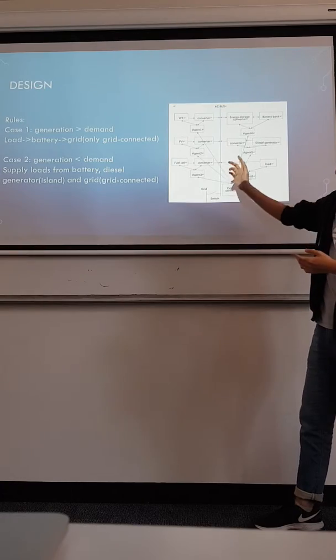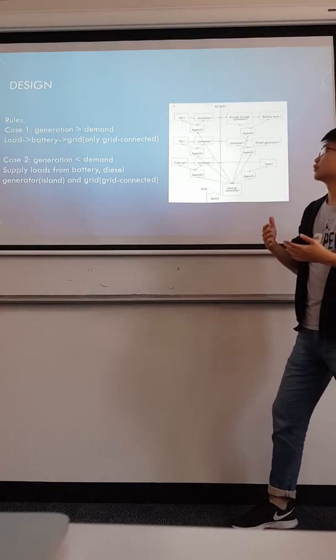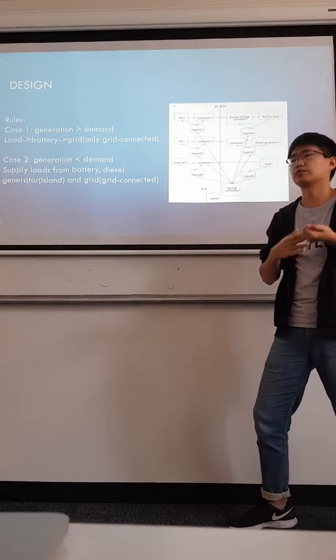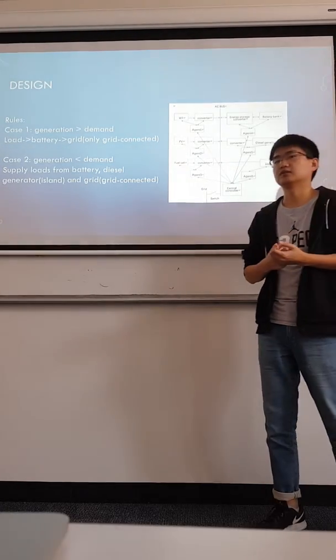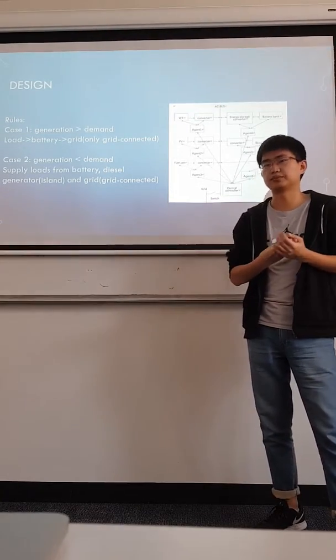As you can see, Agent 1 is to control the wind generator operation based on the forecast weather, wind speed, and output power.